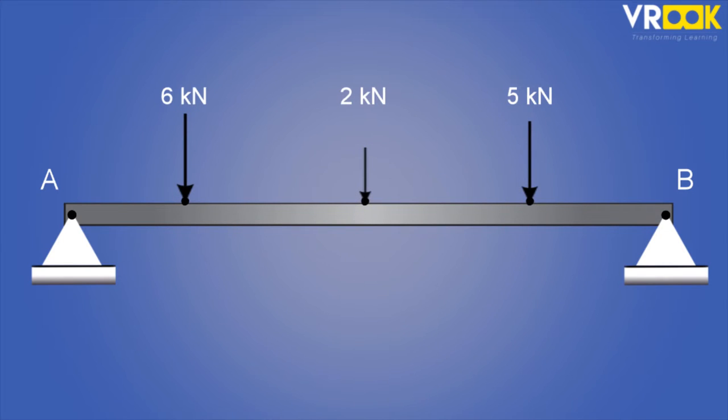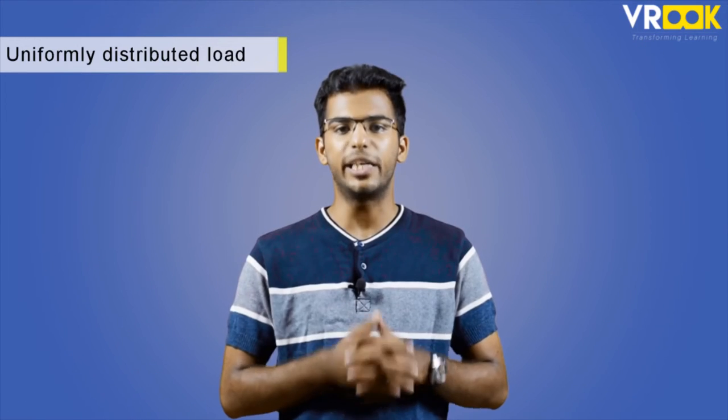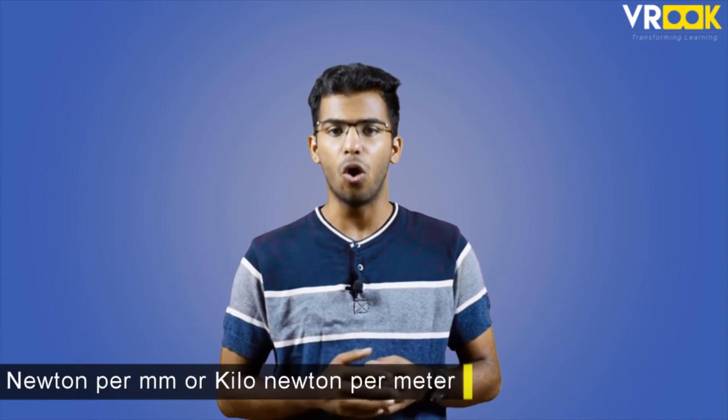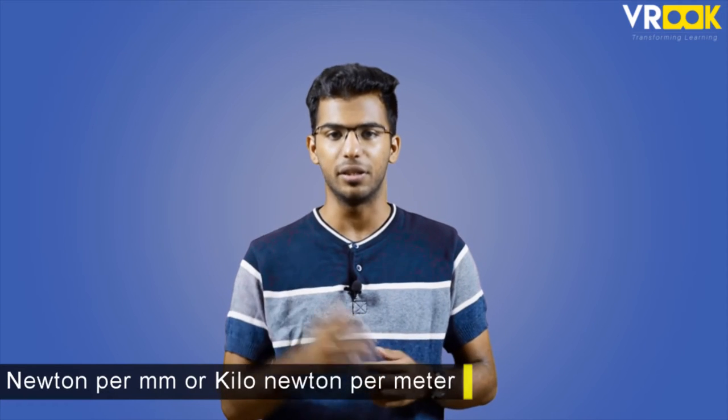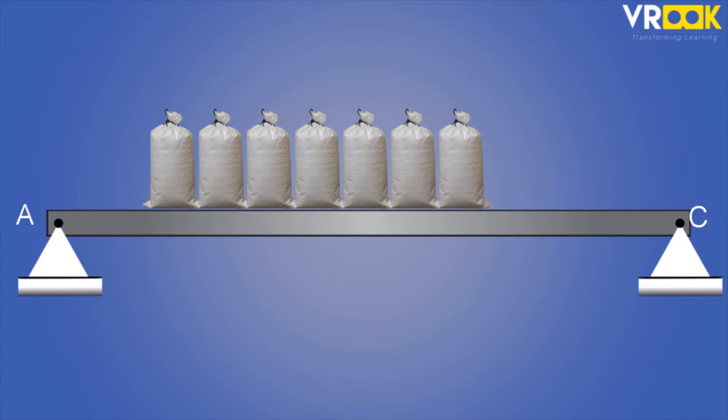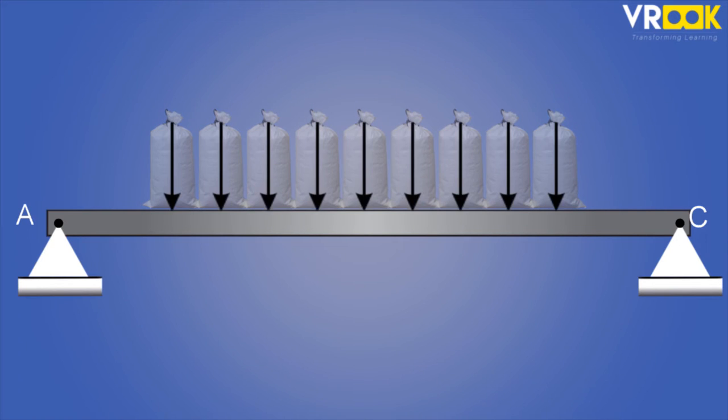Then the second type is UDL or uniformly distributed load. It means for the entire span or the entire length of the beam or even a small part of it, the load is uniform. This load has a unit of Newton per millimeter or kilonewton per meter. For example we can consider sandbags placed on a beam. So all the sandbags are of same size and weight. Hence they apply the same force throughout the span of beam. This is UDL.